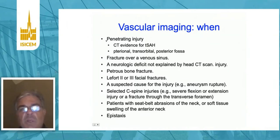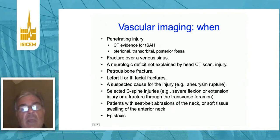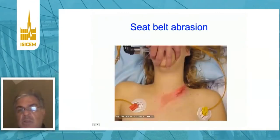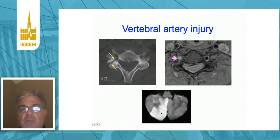Vascular imaging is important and should be considered when there's penetrating injury, particularly with traumatic subarachnoid hemorrhage associated with the penetrating injury, fracture of the venous sinus, any neurologic deficit not explained by anatomic findings on head CT, certain fractures such as facial fractures where we suspect an aneurysm rupture led to the trauma, and in patients with features of specific neck pathology — for example, a fracture into the transverse foramen or a seatbelt abrasion — where imaging might demonstrate a vessel occlusion in the vertebral artery leading to a posterior circulation stroke.